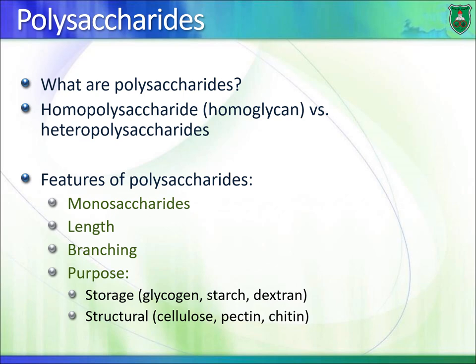When analyzing a polysaccharide, examine the monosaccharide residues, the length of the polysaccharide, and whether it is straight or branched. Polysaccharides fall into two categories: storage polysaccharides used for energy production — including glycogen, starch, and dextran — and structural polysaccharides that form tough structures, such as cellulose, pectin, and chitin.